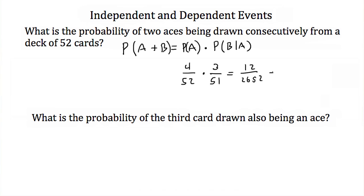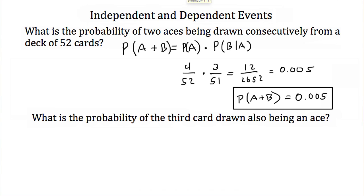Converting to decimal form, we get 0.005. So the probability of both aces being drawn consecutively is less than 1% — half a percent, or 0.005.